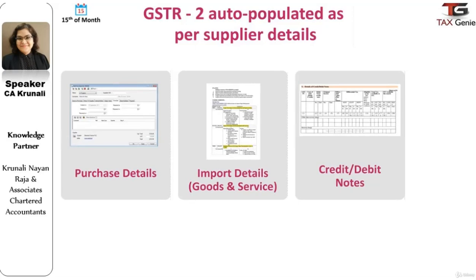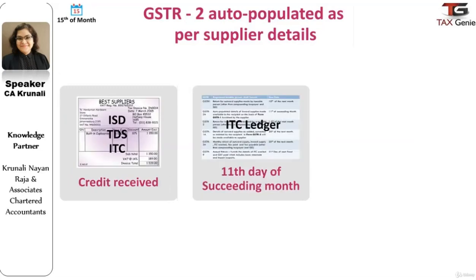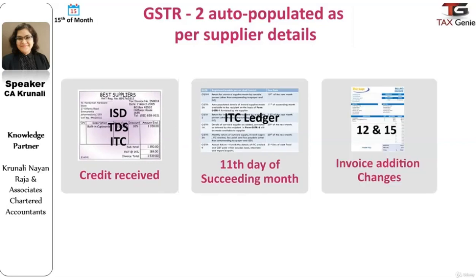It will also include details of debit and credit notes, amendments to details of inward supplies received in earlier tax periods, post-purchase discounts which are received, details of supplies received from compounding or unregistered dealers, and other exempt, nil-rated, or non-GST supplies. Additionally, credit received in the form of input service distributors, TDS, and input tax credit is included.